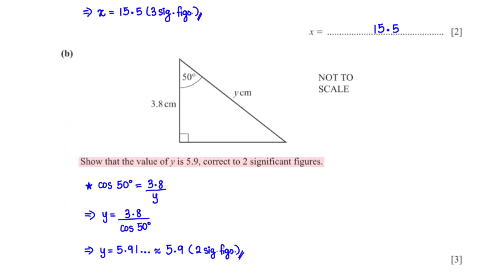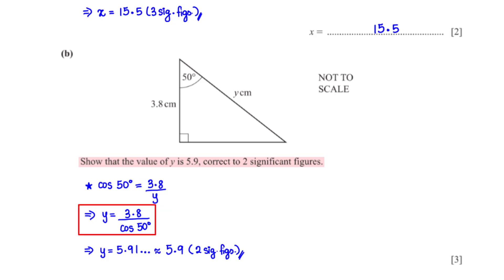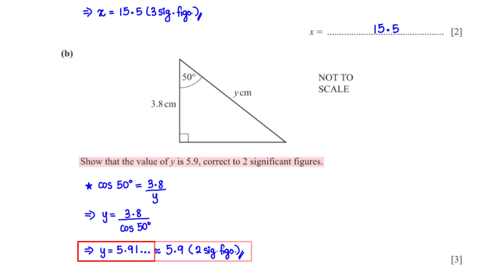Show that the value of y is 5.9 correct to 2 significant figures. To get the value of y, we apply SOHCAHTOA. This gives us cos 50 degrees equals 3.8 divided by y. When we make y the subject, and type this into the calculator, we get 5.91, which is approximately 5.9 rounded to 2 significant figures.